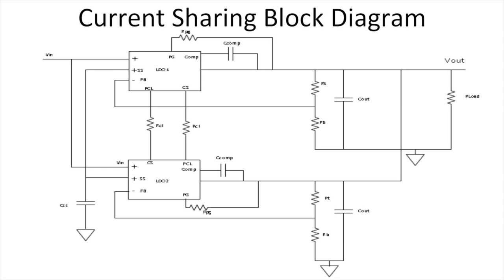Here we see a basic circuit diagram of two LDOs or low dropout regulators connected for current sharing operation. The PCL pin of LDO2 is then connected to the CS pin of LDO1 through another RCL resistor. The value of this resistor connected to the PCL pin sets the current limit threshold.